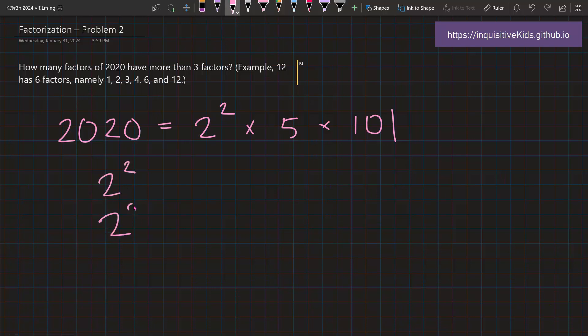but adding on to that, we can have 2² times 5, or 2² times 101, or all of these together, 2² times 5 times 101.